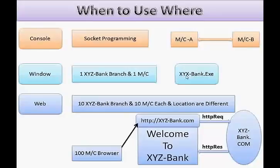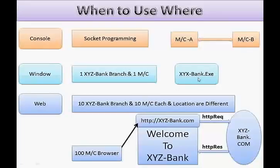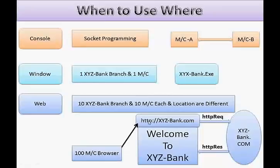After some time the bank's requirement changes — now the bank has 10 branches, each branch has 10 machines, and the locations are also different. So in this case there are 100 machines and it's not possible to install XYZ Bank .exe everywhere. So here I go for ASP.NET — I create one website called xyzbank.com. All 100 machine users just open their browser and type http://xyzbank.com. My requirement is achieved, and if I change something I just change it on the xyzbank.com server.